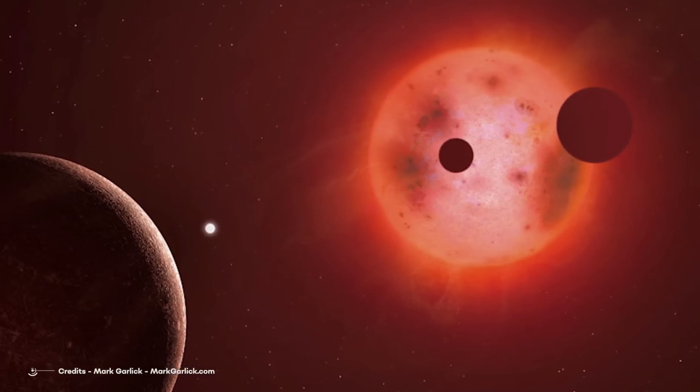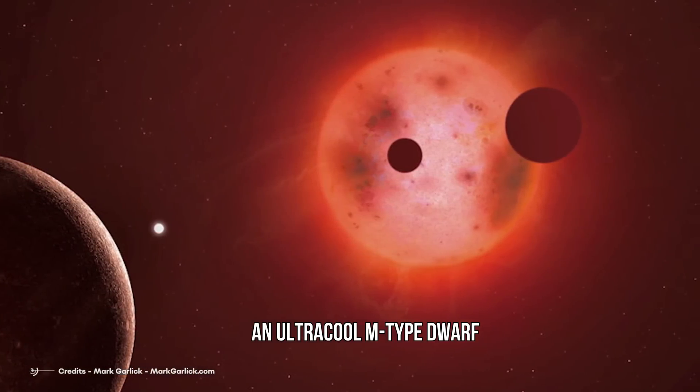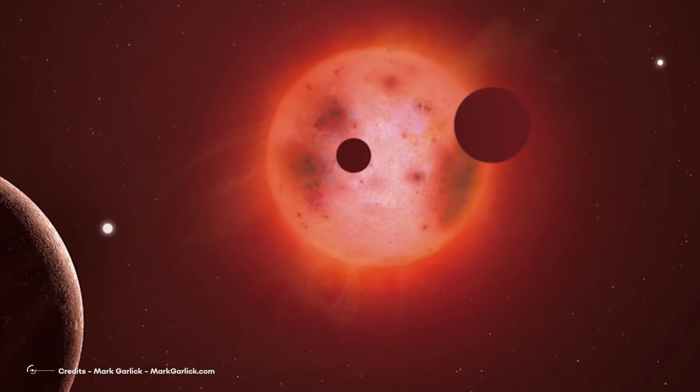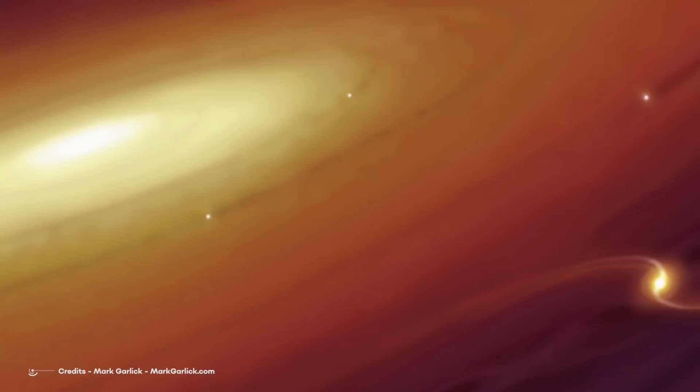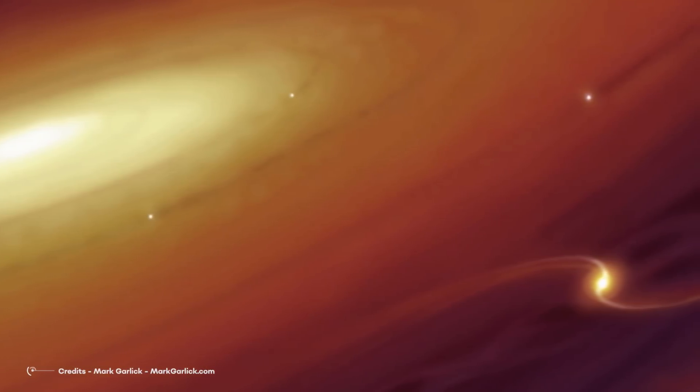TRAPPIST-1 is a small red star, an ultra-cool M-type dwarf. It belongs to the smallest class of stars. TRAPPIST-1 didn't like to be alone. The circumstellar disk collapsed through gravity, and planets started to form.